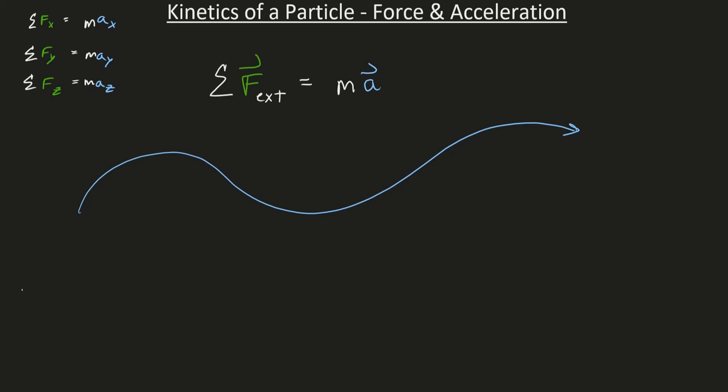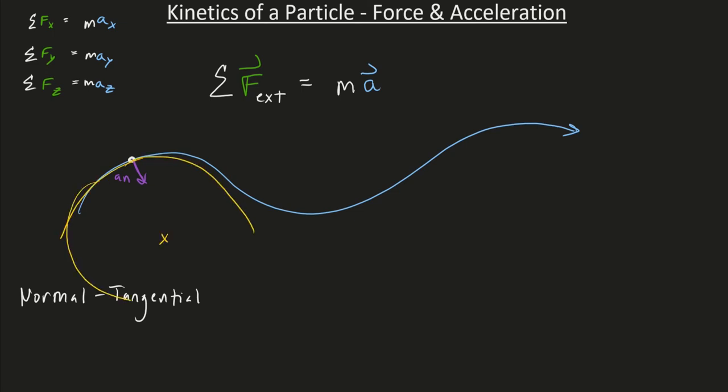For instance, we have the normal tangential coordinate system. If our particle was here, it would have some normal acceleration pointing towards the center of the circle that the object's on at the moment. And of course, we would have some tangential acceleration. So what we would do here is we would add up the forces in the tangential direction and equate that to the mass times the acceleration in the tangential direction. And we would do the same thing for the forces acting in the normal direction.